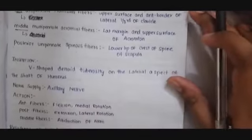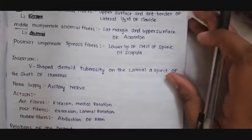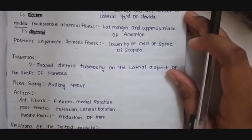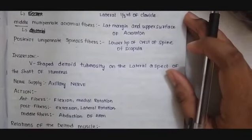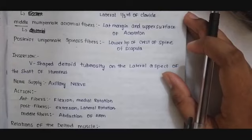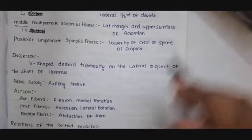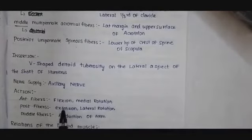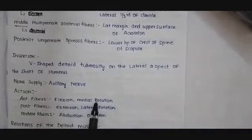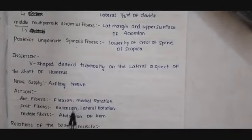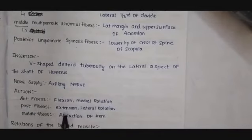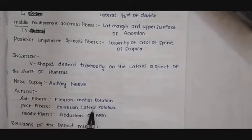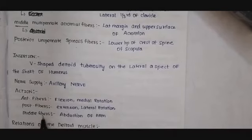The deltoid muscle has three fibers: anterior fiber, posterior fiber, and the middle fiber. The anterior fiber helps in flexion and medial rotation. The opposite of this is done by the posterior fiber, namely extension and lateral rotation. The middle fibers of deltoid help in abduction.